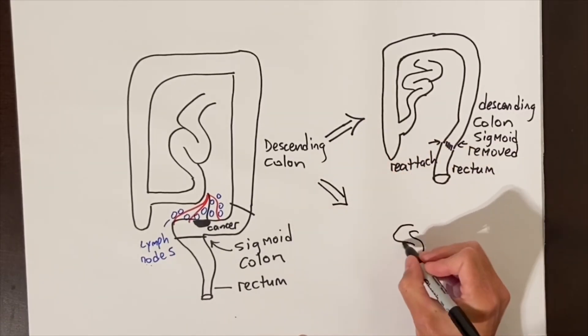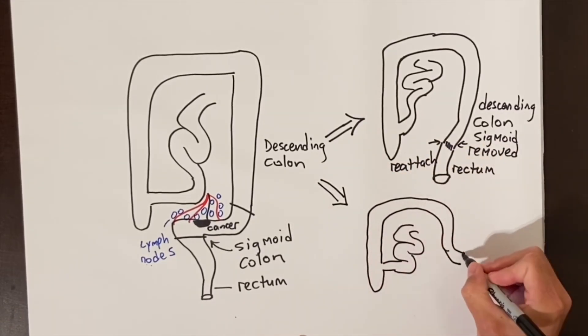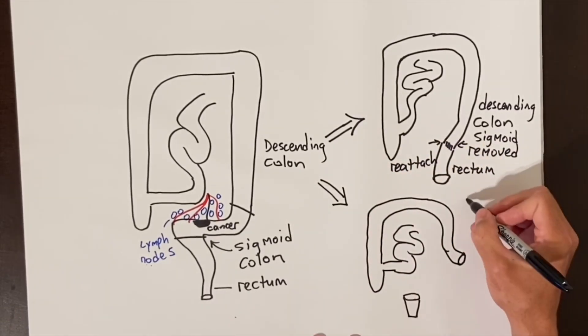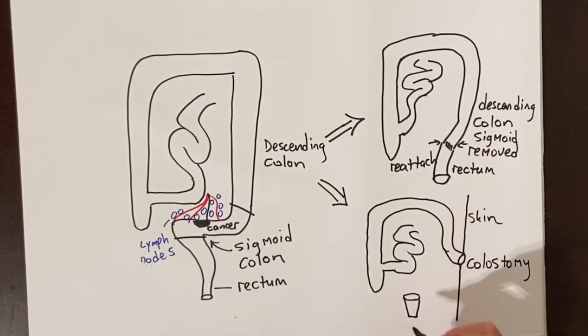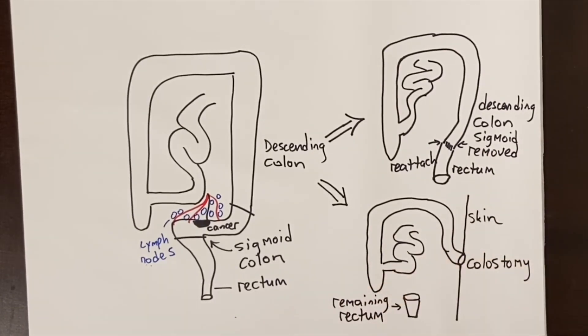An ostomy is when we cannot safely put the intestinal tract back together again. A colostomy is a portion of the colon that is brought up to the skin and opened so that stool can come out into a bag.